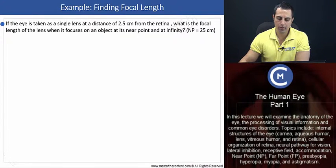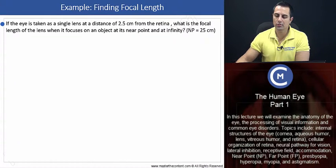Let's begin by reading our problem. If the eye is taken as a single lens at a distance of 2.5 centimeters from the retina, what is the focal length of the lens when it focuses on an object at its near point and at infinity? And we're given the near point as 25 centimeters.